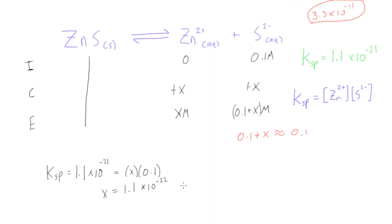This is our molar solubility of zinc sulfide when the common ion is present. You can see that the common ion has really suppressed the solubility — it's almost 11 orders of magnitude less than it was in pure water.